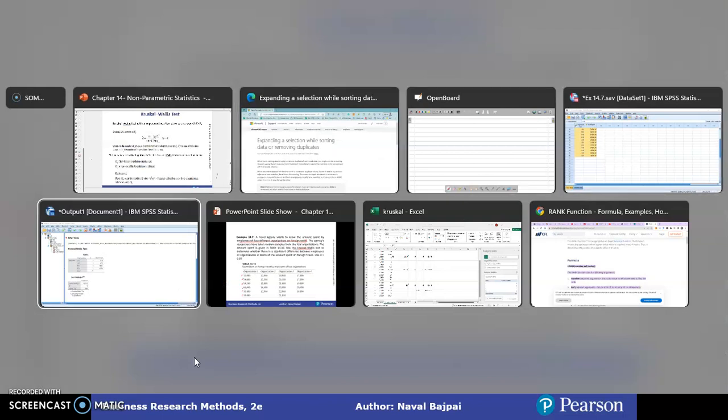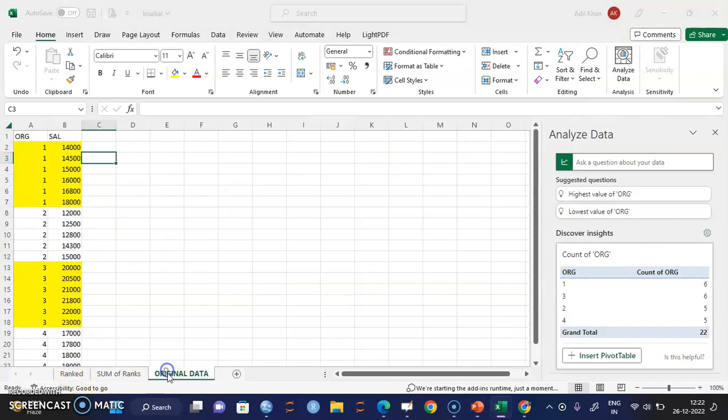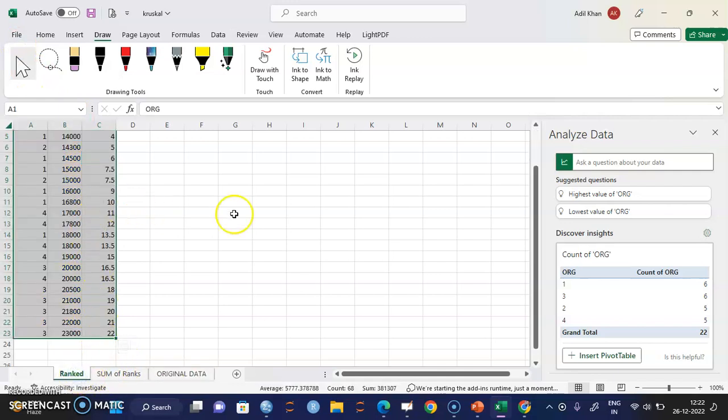This is the Excel sheet. So let me show you the original data. So what we have done, we have taken all the data in this sheet. So these are the organizations, one, two, three, four, and these are the values. What we do now is we have to calculate the ranks.